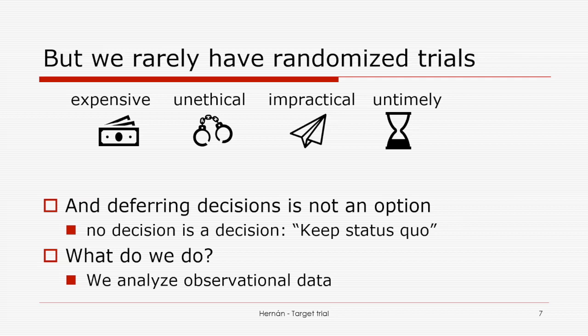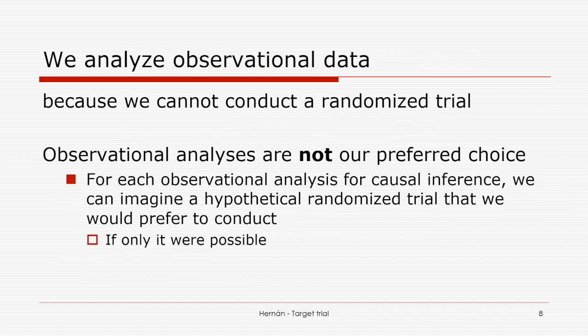In all these cases where we don't have a randomized trial — or don't have one yet — we use observational data. We analyze observational data not because we love it, but because it's the only option if we want to support decision-making using human data. Either we use observational data or we rely on gut feeling. In the absence of randomized trial data, there are no alternatives.